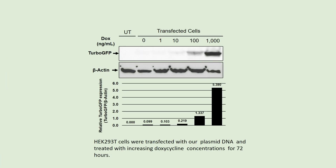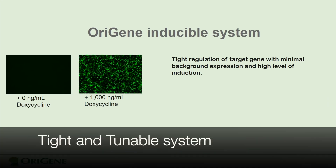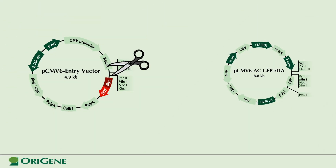This here shows the inducible expression of turbo-GFP protein by Western Blotting Analysis. Our system offers tight regulation of the target gene with minimal background expression — it solves the leakiness problem which most systems have. All of OriGene's true ORF inserts and the entry vectors can be easily shuttled into the inducible vectors with a cut-and-paste function.